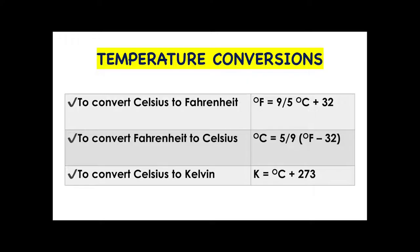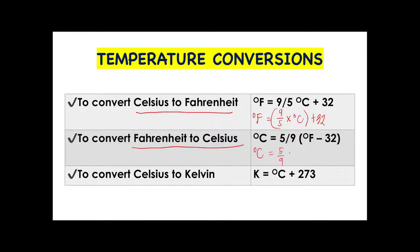For temperature conversions, to convert Celsius to Fahrenheit: °F = (9/5 × °C) + 32. To convert Fahrenheit to Celsius: °C = 5/9 × (°F − 32). Always remember the PEMDAS rule — solve everything inside the parenthesis first before multiplying by values outside. To convert Celsius to Kelvin, add 273 to your degree Celsius value. Some references use 273.15, but in this course we will use the whole number 273.